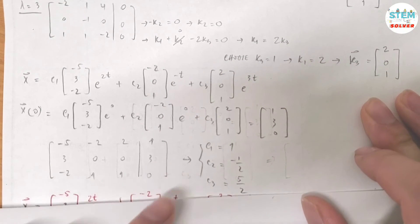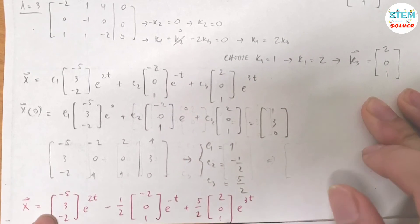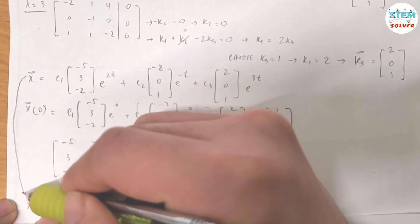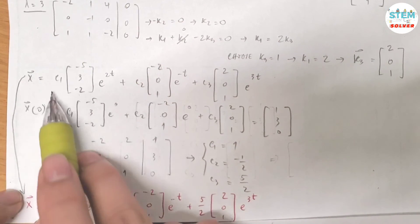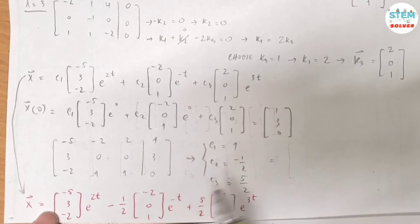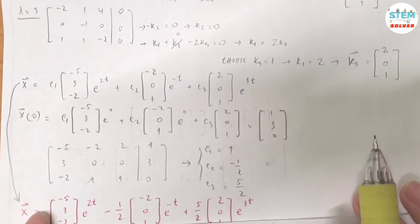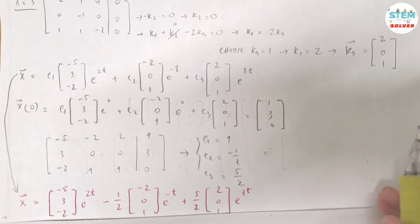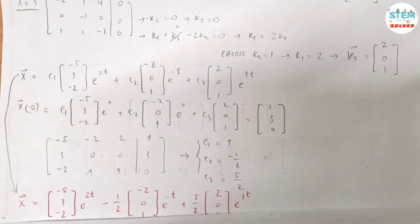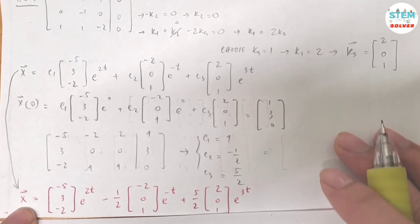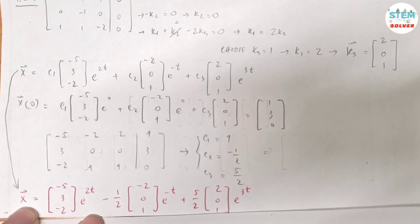After I found out c₁, c₂, c₃, look back in here and then replace c₁, c₂, c₃. That gives me this final answer. What is written in red is your final answer. That's it.